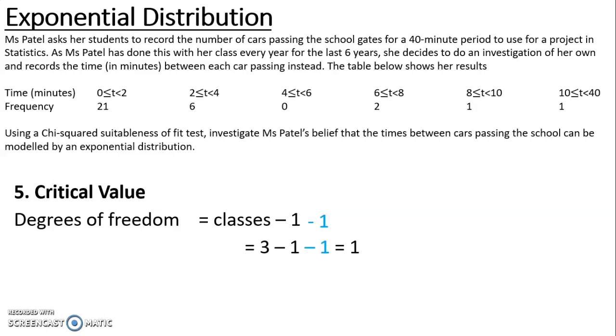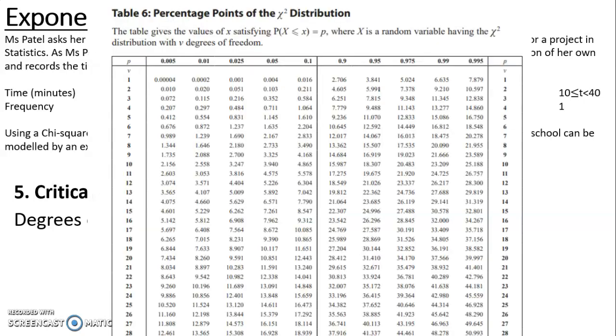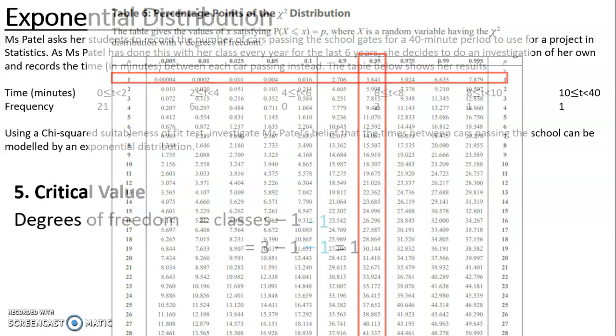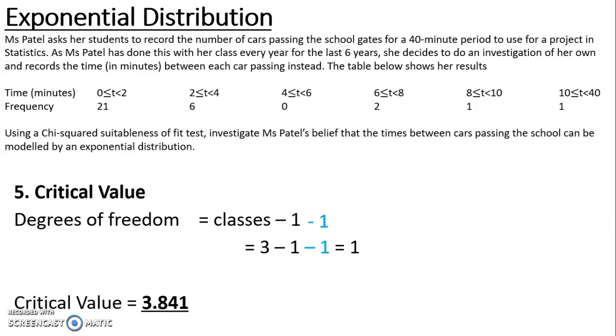That is quite a low degrees of freedom, the smallest one I can use, which means my critical value is going to be small. So my likelihood for accepting is being reduced dramatically. So I turn to table 6, the percentage points of the chi-squared distribution. I go along the 1 degree of freedom row. We said we were using a 5% level of significance, and because it is upper one-tailed, I'm looking down the 0.95 column. And where they cross over, I get a value of 3.841, and that is my critical value for this test.